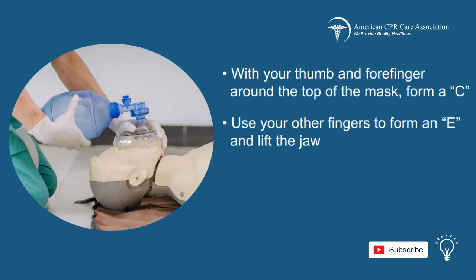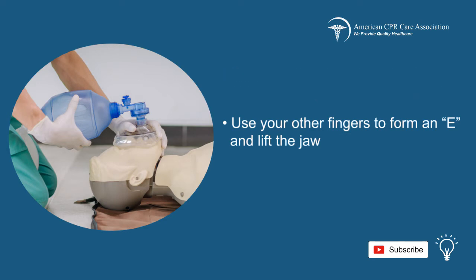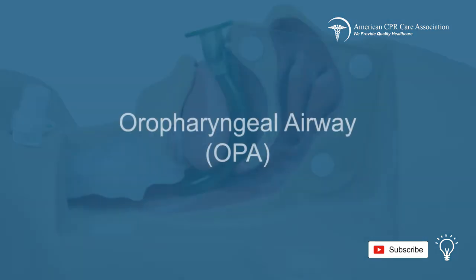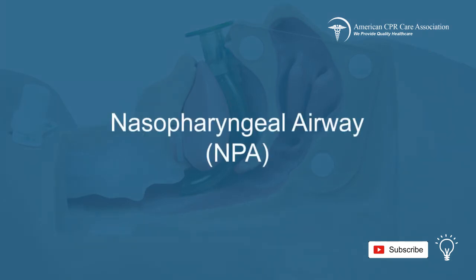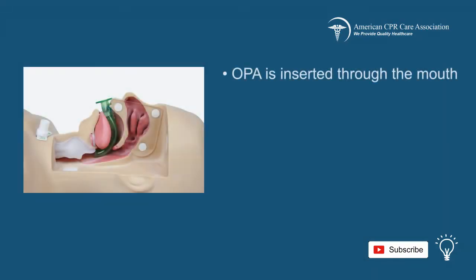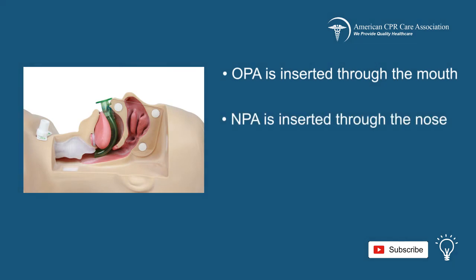Use your other fingers to form the letter E and lift the jaw. Sometimes this method of ventilation is sufficient. If it is not sufficient, then a basic airway must be considered. The basic airways are oropharyngeal airway or OPA and nasopharyngeal airway or NPA. The OPA is inserted through the mouth and the NPA is inserted through the nose, with both extending to the pharynx.